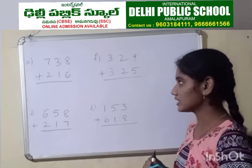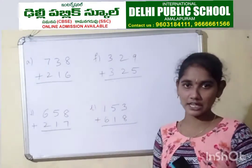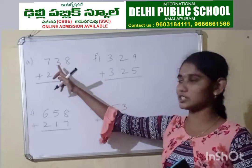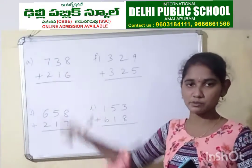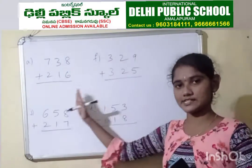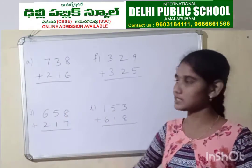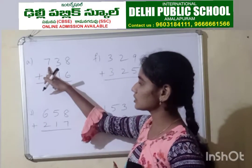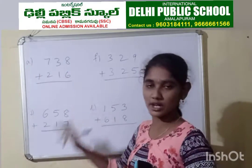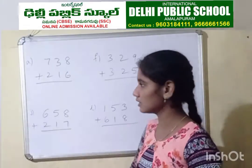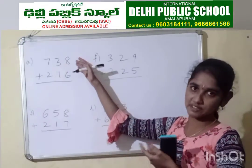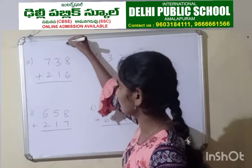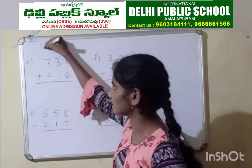738 plus 216. Till now we have done additions with 2-digit numbers — it means 2 digits, up to the 10's place. Today we are going to exceed one more digit. It is the 100's place. Let us solve this problem. The question is 738 plus 216. We are going to solve the problem from the 1's, 10's, and then 100's.